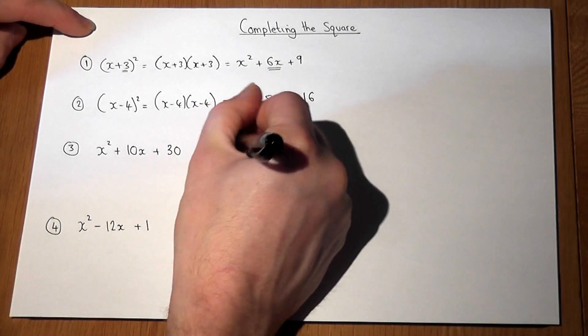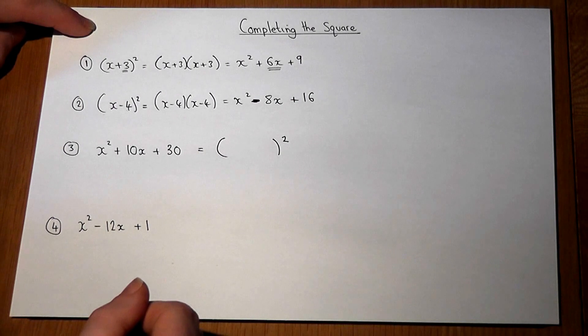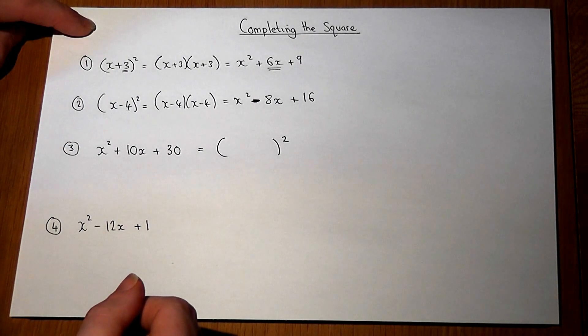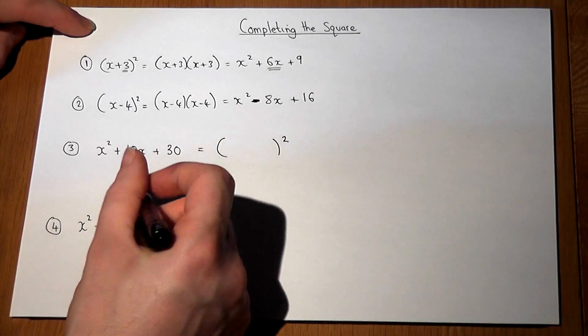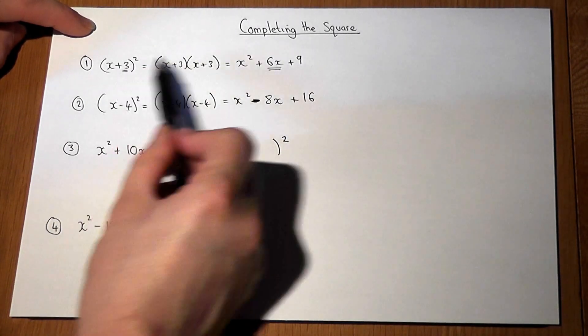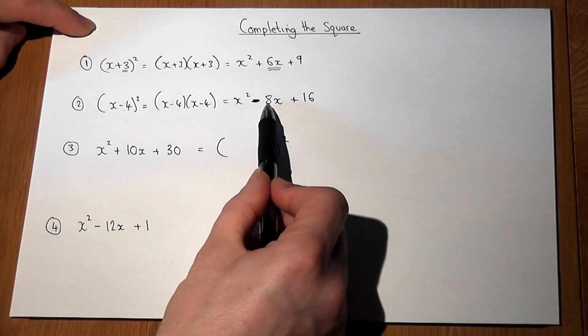We want to write this as something squared, if possible. The trick here is to go in reverse. The 3 doubled to give a 6, and the -4 doubled to give the -8.